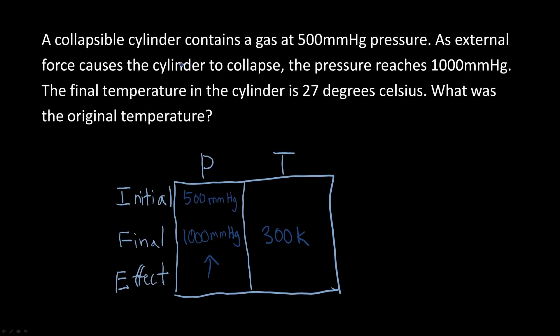Let's attempt a problem using Gay-Lussac's Law. A collapsible cylinder contains a gas at 500 mmHg pressure. As external force causes the cylinder to collapse, the pressure reaches 1000 mmHg. The final temperature is 27 degrees Celsius. What was the original temperature?